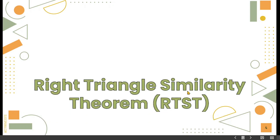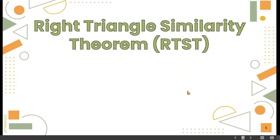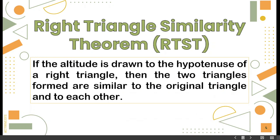Our lesson for today is all about the right triangle similarity theorem, also known as RTST. If the altitude is drawn to the hypotenuse of a right triangle, then the two triangles formed are similar to the original triangle and to each other.